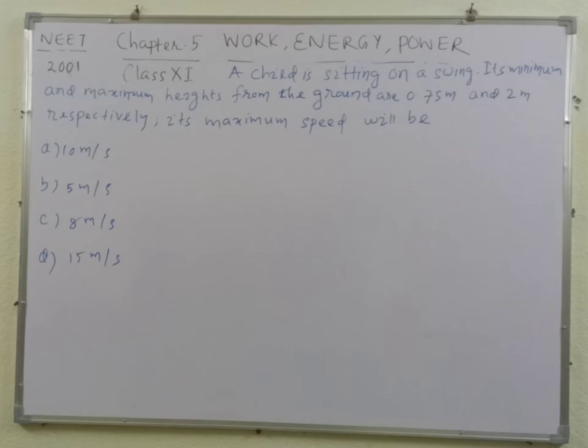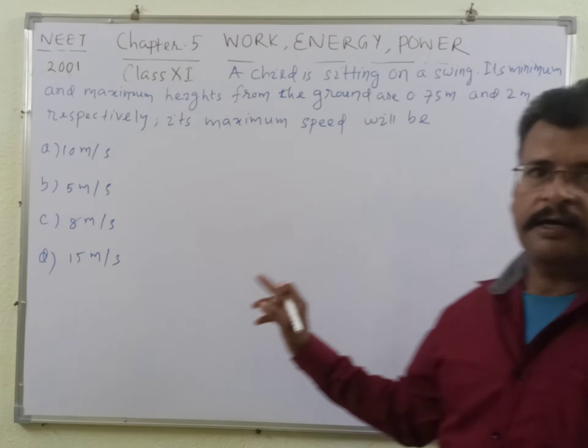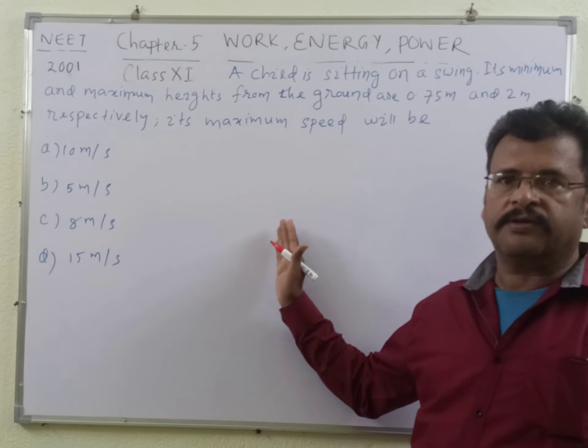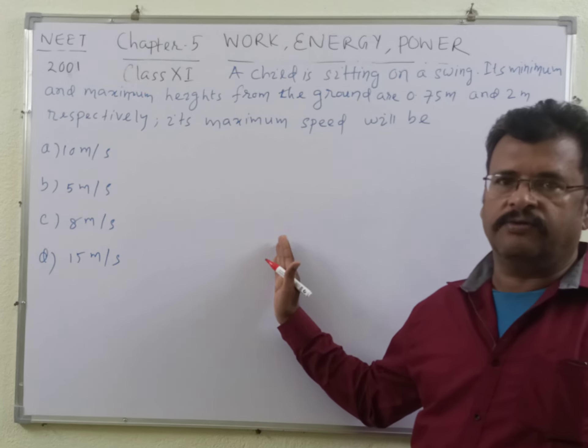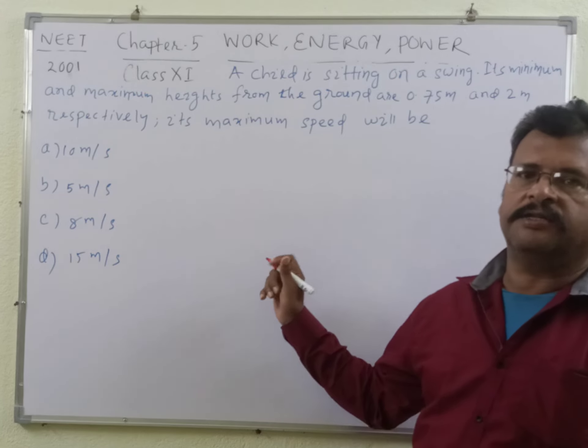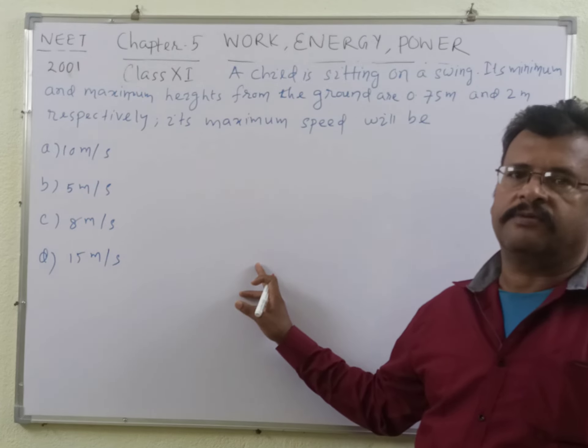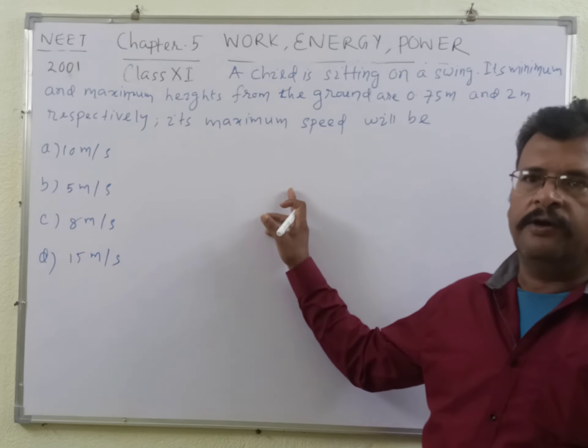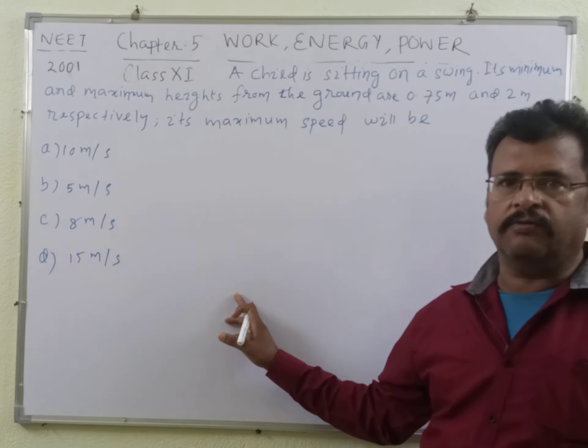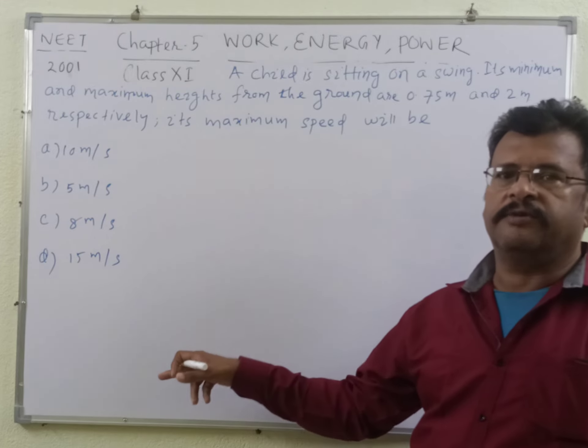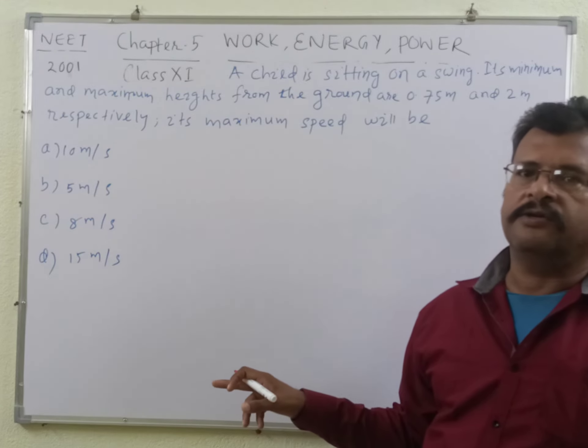Students, the child is sitting on the swing and when it rises, the height of the swing increases. What happens? Its potential energy increases at the expense of the kinetic energy. Or when it falls down, its potential energy decreases which is converted into kinetic energy of the swing.